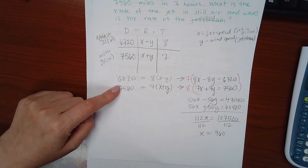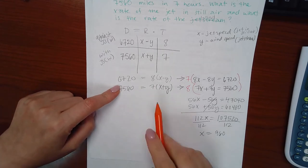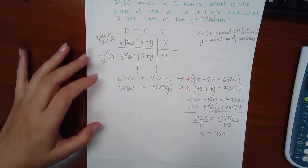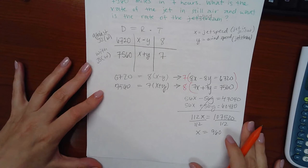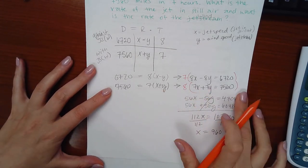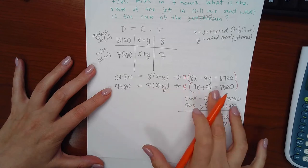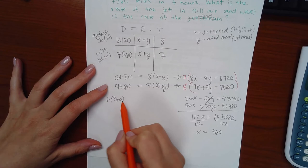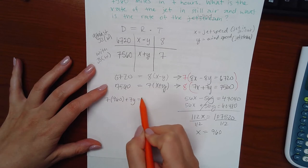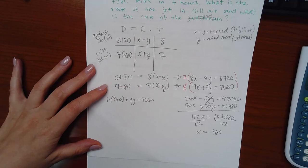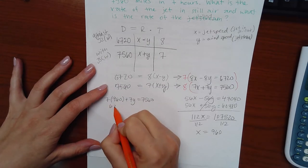However, I will still need to find Y. I would much rather plug it into the equation that's going to have a positive Y because it just means less manipulation when I have to figure out what Y is. So I'm going to take the bottom equation and I'm going to use the expanded version where we actually already multiplied by seven. So I'm going to take seven and instead of X, I'm going to put 960 plus 7Y equal to 7560. I get this number.